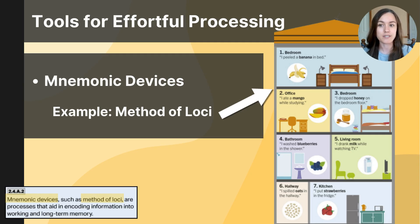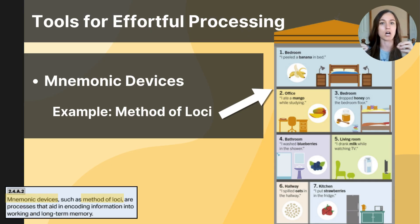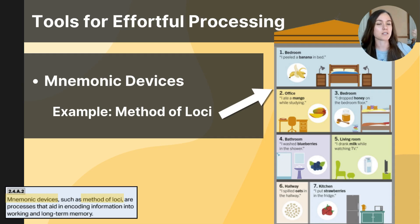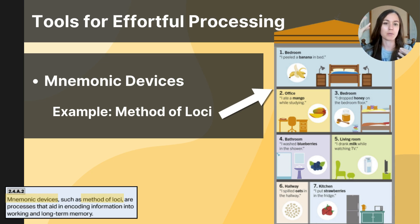Mnemonic devices don't necessarily have to be words — they can be vivid images or patterns. One example is the method of loci, which involves associating information with different points on a familiar journey. You're connecting new information with an existing memory, and as you walk back through that journey in your mind, you can pick up different pieces of information. For example, if you need to remember a grocery list, you could imagine placing each item somewhere in your house. As you go through the store, you walk back through your house picking up the banana, the mango, the honey — intentionally recalling items placed in familiar locations. Mnemonic devices are tools for effortful processing.